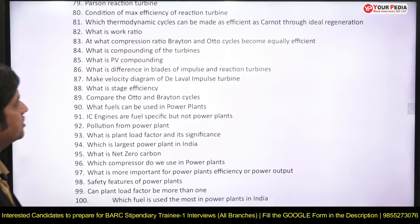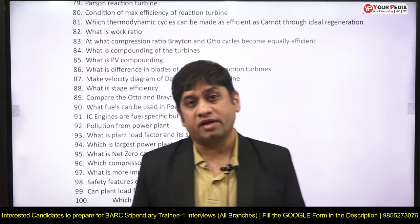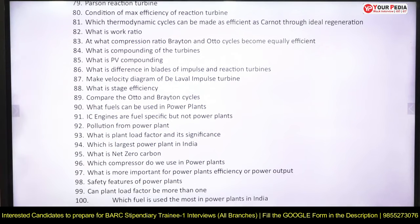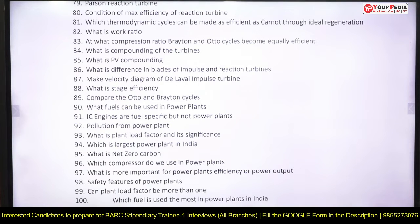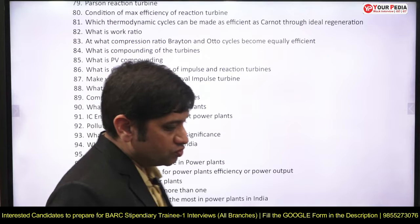Which turbine is more efficient — impulse or reaction? What is the efficiency of the Parsons reaction turbine and at what condition do you get maximum efficiency? Which thermodynamic cycle can be made as efficient as the Carnot cycle after ideal regeneration? What is work ratio? Compare Brayton cycle and Otto cycle — at what compression ratio are they equally efficient, and which is more efficient? What do you understand by compounding and why is it required — pressure compounding, velocity compounding? What is plant load factor and can it be more than one? What is net zero? What compressor is used in a power plant and what are the safety features?